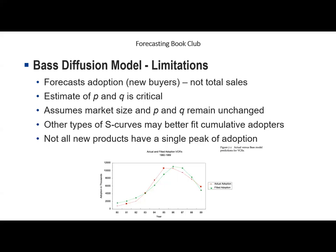The estimate of P and Q has a big influence on the adoption forecast, so they must be chosen wisely. The basic Bass model assumes market size, P, and Q remain unchanged, failing to account for increased advertising, price reductions, or competition — though extensions of the model try to address these. There are also other S-shaped curves that may better fit cumulative adopters, and not all products follow a single-peak adoption pattern. I have never used the Bass model in my forecasting jobs, so I'd be interested to hear others' experiences.